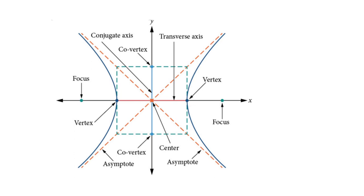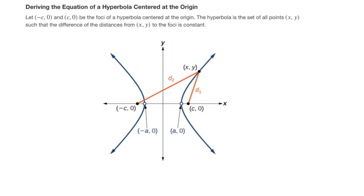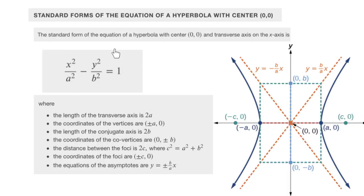As x approaches positive or negative infinity, the graph gets closer and closer to these lines. So every hyperbola has two asymptotes. We can define the hyperbola as the set of all points x, y such that the difference of the distances from x, y to the foci is a constant. The equation of the asymptotes will be y = (b/a)x and y = -(b/a)x — one with positive slope and one with negative slope.